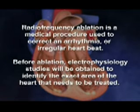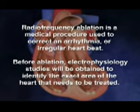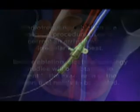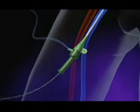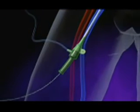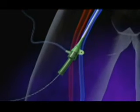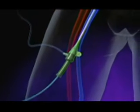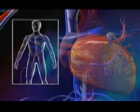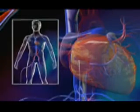Before ablation, electrophysiology studies will be obtained to identify the exact area of the heart that needs to be treated. During the ablation procedure, a catheter is inserted into a vein in the leg and is guided through the vein and into the heart.